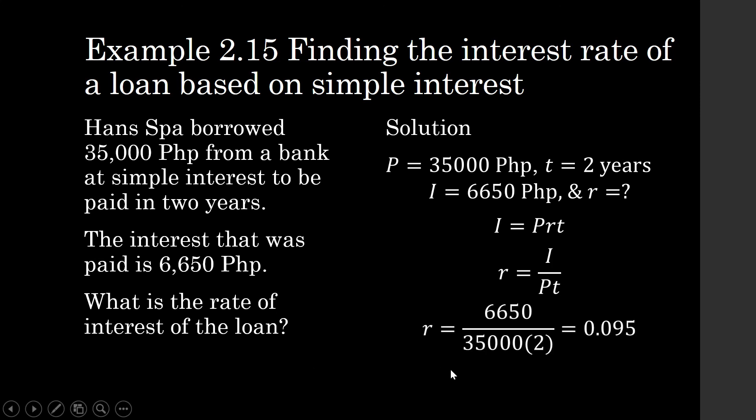R is equal to 6,650 divided by 35,000 times 2. R is equal to 0.095, or in percent, this is 9.5%.